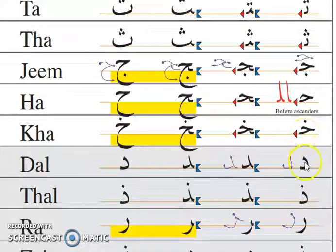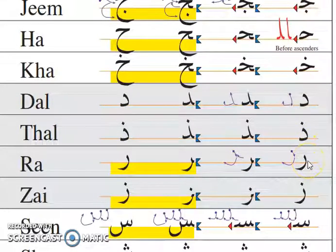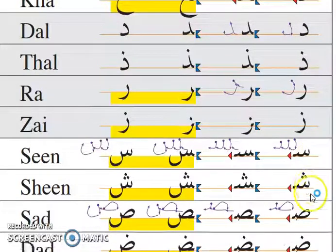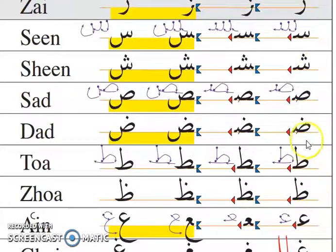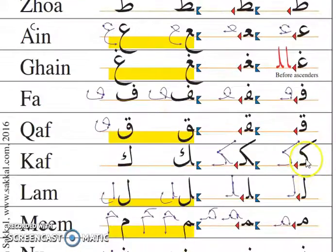Cha, Dal, Zal, Ra, Zaa, Sin, Saad, Da. Going back up: Ka, Lam, Meem.